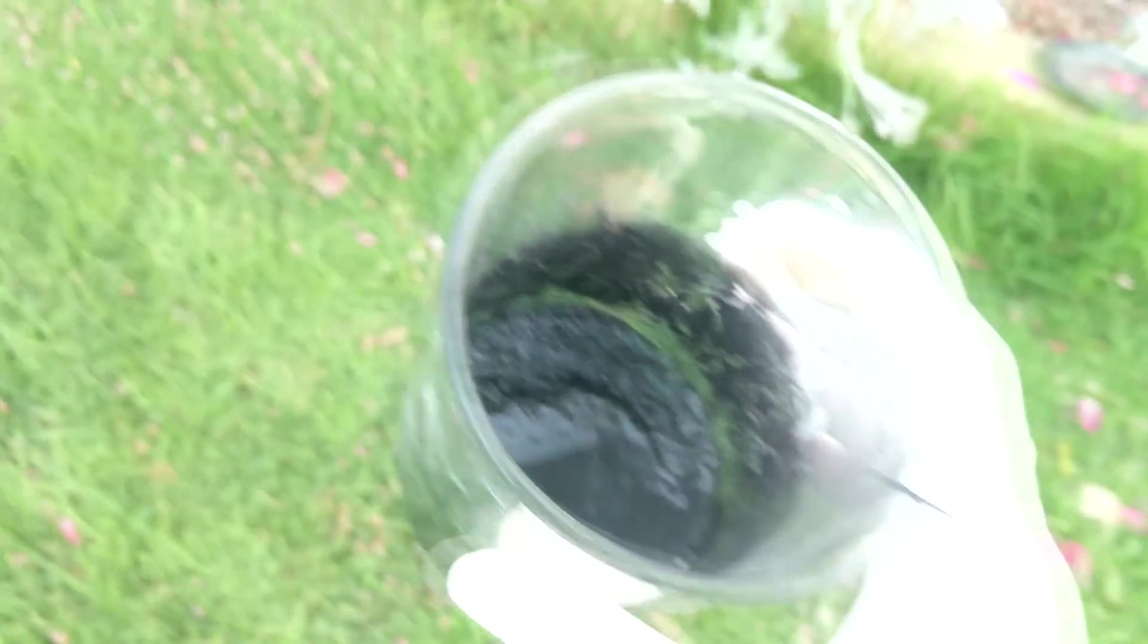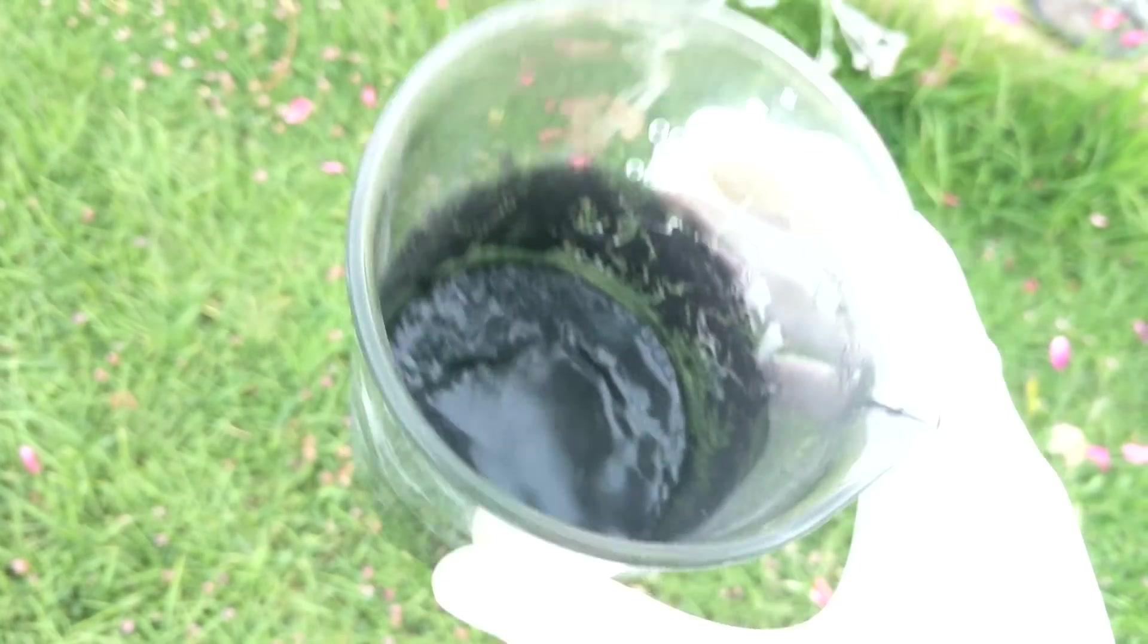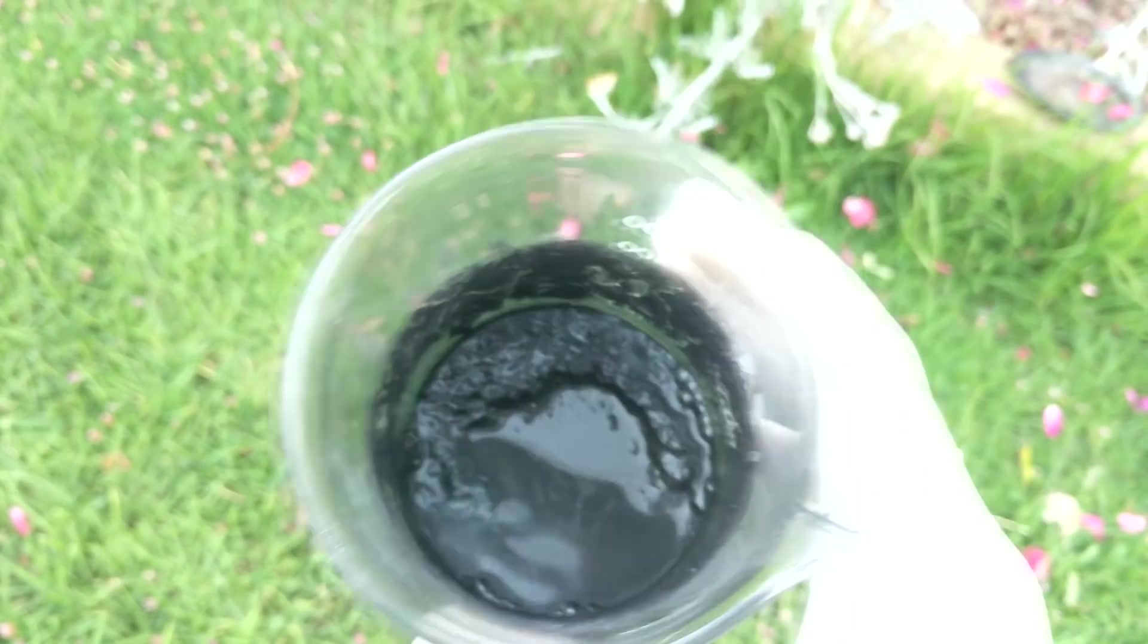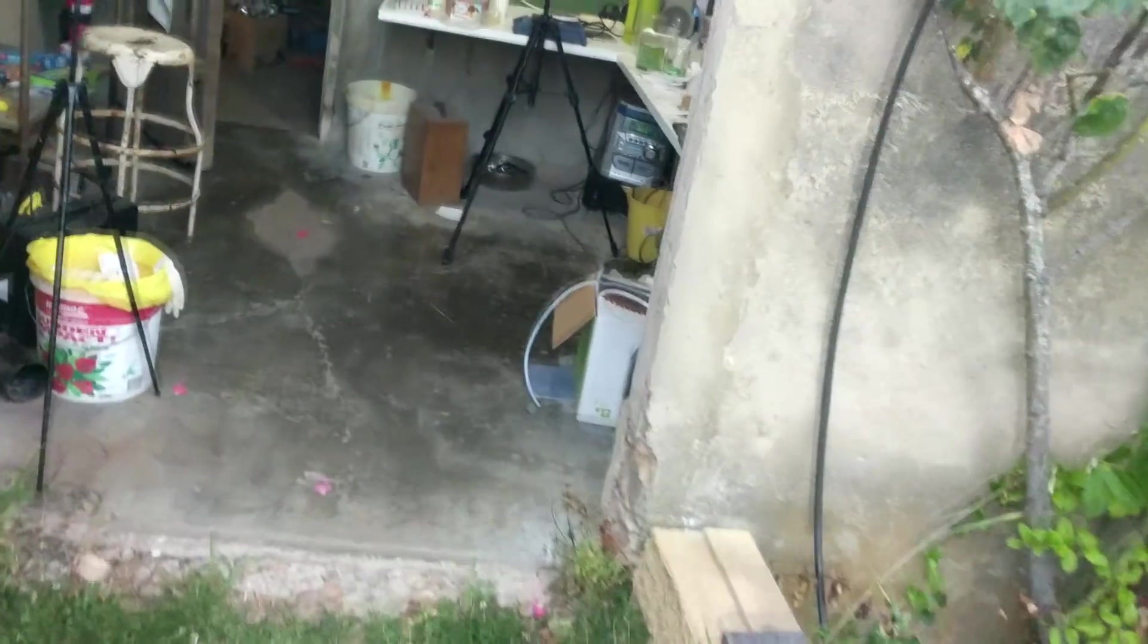But because cobalt likes to do different oxidation states, and it can jump around a bit, it ends up oxidizing the acid to chlorine. So it's a good idea to do this outside, because everything inside the lab starts to rust so much more when there's chlorine gas present.